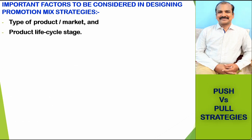The second factor to be considered in designing promotion mix strategies is product life cycle stage. The effects of different promotion tools also vary with stages of the product life cycle. In the introduction stage, advertising and public relations are good for producing high awareness, and sales promotion is useful in promoting early trial of the products; personal selling must be used to get the trade to carry the product. In the growth stage, advertising and public relations continue to be powerful influences, whereas sales promotion can be reduced because fewer incentives are needed.